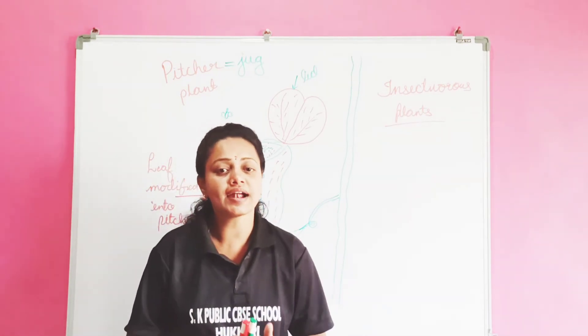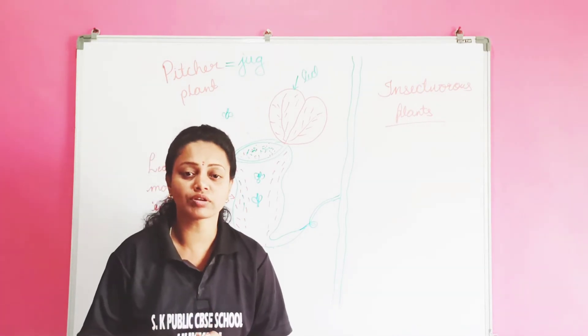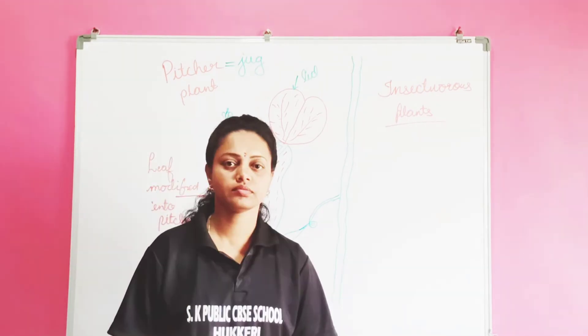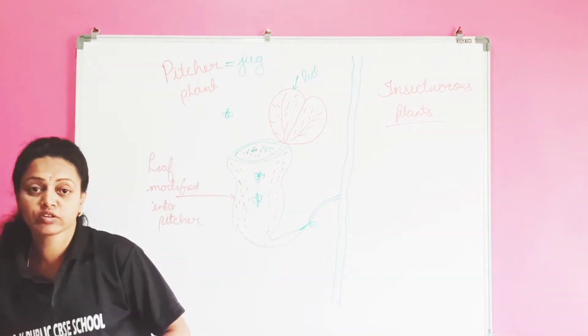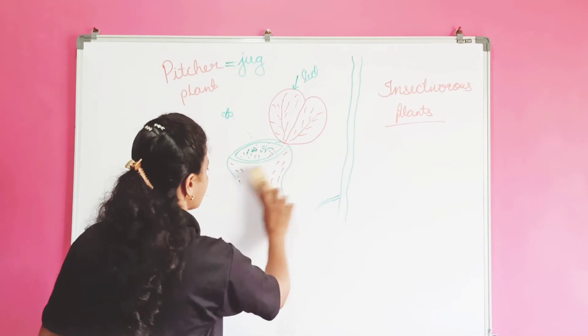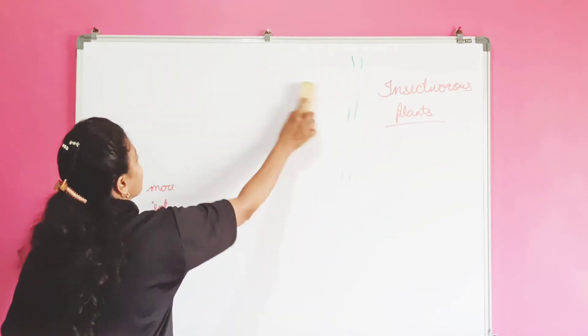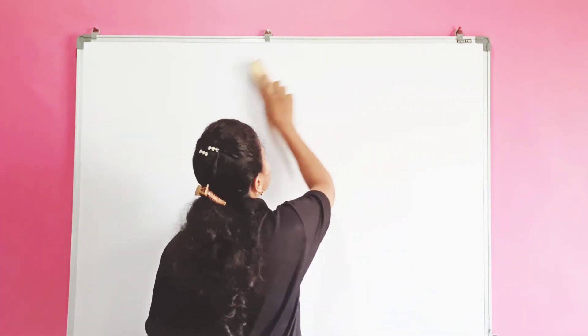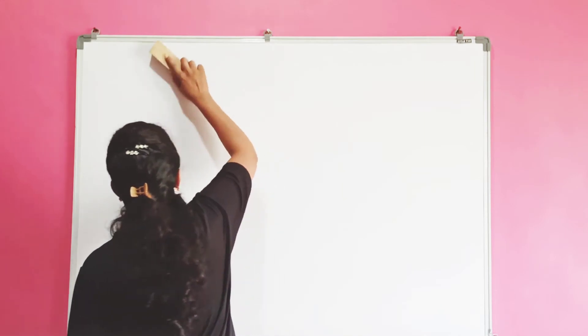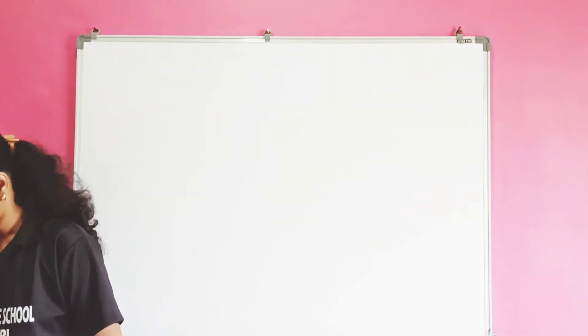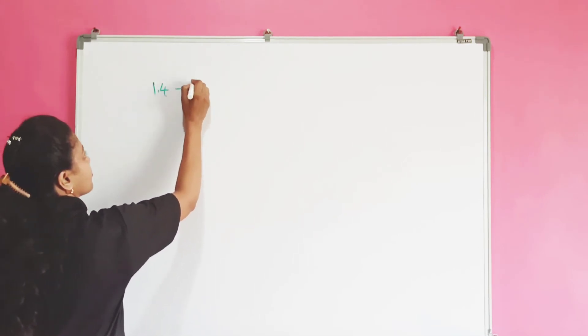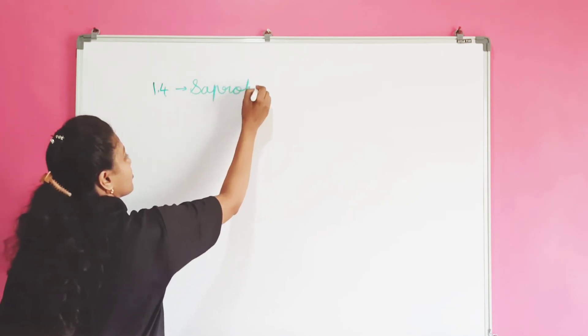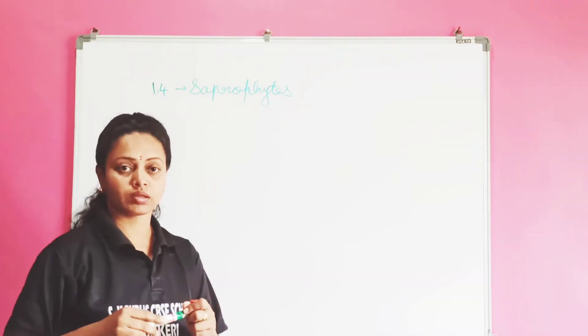Now is it possible that such plants do not get all the required nutrients from the soil in which they grow? Hope you have understood about the pitcher plants. Next we are going to study about the saprophytes. Already you know what is parasite, cascuta, insect eating plants that is pitcher plant. Now let's study about the saprophytes.